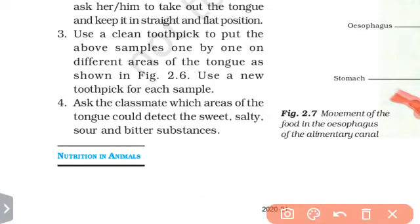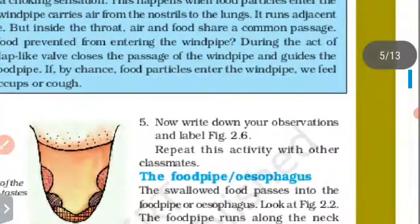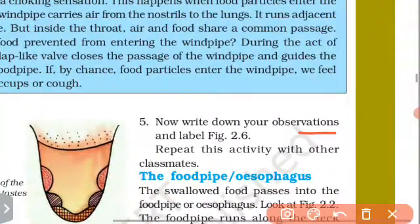Ask the classmate which areas of the tongue could detect the sweet, salty, sour, and bitter substances. Write down your observations and label figure 2.6 with the positions where each taste was detected.